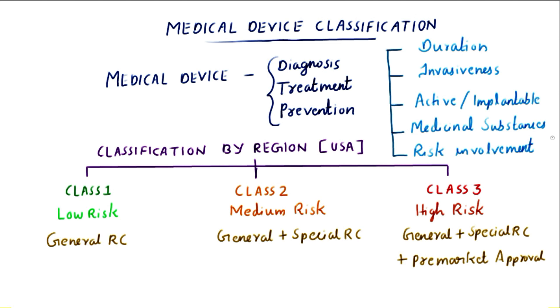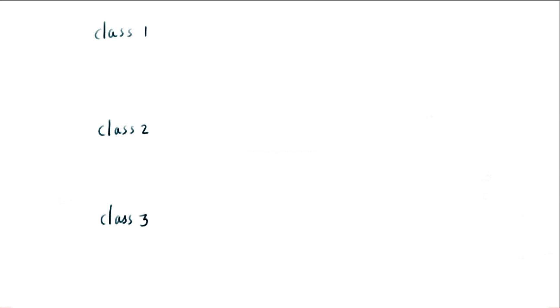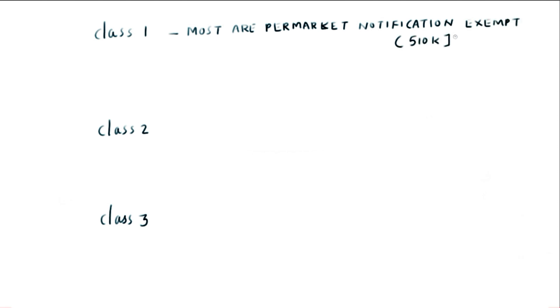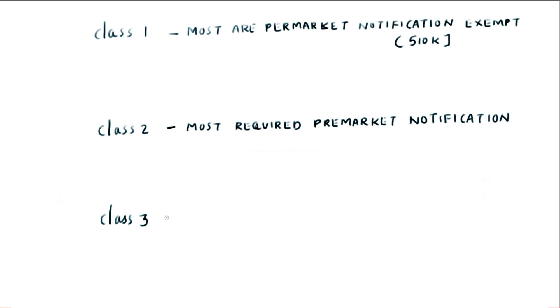Most Class 1 devices are exempt from pre-market notification. Pre-market notification, or 510(k) clearance, is a pre-market submission made to FDA to demonstrate that the device is safe and effective, or equivalent or better than an existing legally marketed device. Most Class 2 devices require pre-market notification, and most Class 3 devices require pre-market approval.